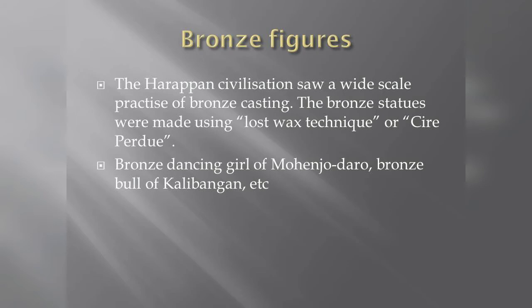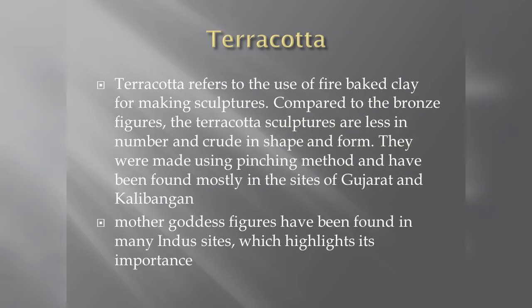There are many bronze figures and sculptures made using the lost wax technique. The dancing girl is a very important sculpture, also made using the lost wax technique. The bronze bull of Kalibanga is notable, and terracotta figures were made of fire-baked clay.